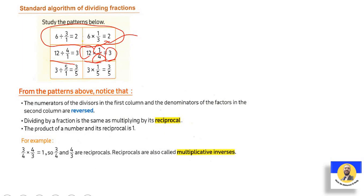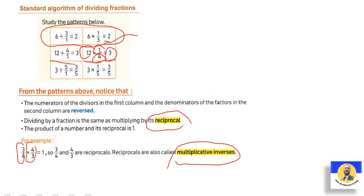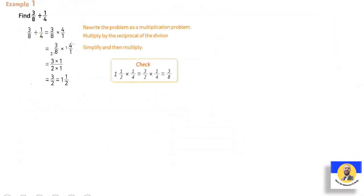Now let's learn about the reciprocal, also called the multiplicative inverse — they have the same meaning. The reciprocal means you flip the fraction up and down. For example, the reciprocal of three-quarters is four-thirds. When you multiply a number by its reciprocal (multiplicative inverse), the product always equals one.